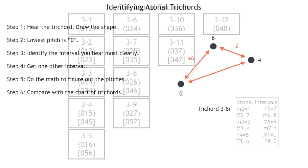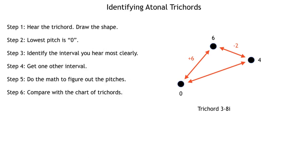This is a 3-8 trichord: zero, four, six. But I'm not done yet because I noticed that this one is in its inverted form. So I'm going to mark that by putting an I after the Fort number. So I have trichord 3-8 I. And that's really all there is to it.